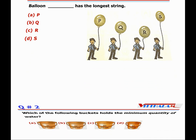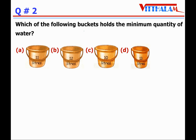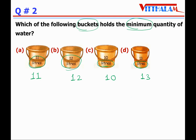Next, Question 2: which of the following buckets holds the minimum quantity of water? यहां पर चार bucket हैं A, B, C, D। A में 11 liters, B में 12 liters, C में 10 liters, और D में 13 liters। सबसे छोटा number 10 है, that means C। Bucket C में सबसे कम quantity of water आएगा, so our answer is C.